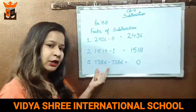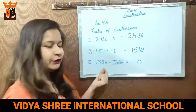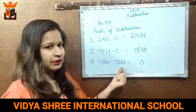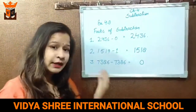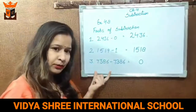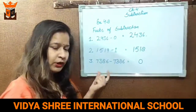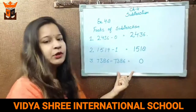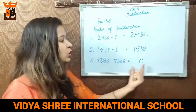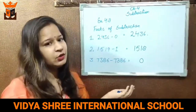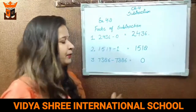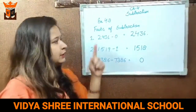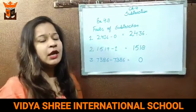Similarly, yeh jo 4-digit number hai — 7386 — is mein se yeh hi 4-digit number 7386 ko less karte hain. That means meri paas kuch amount hai, us mein se mein same amount kisi ko de du, yaani ki puri amount kisi ko de du, to meri paas kya bachega? 0. Meri paas kuch bhi nahi bachega. So, it is the third fact of subtraction.